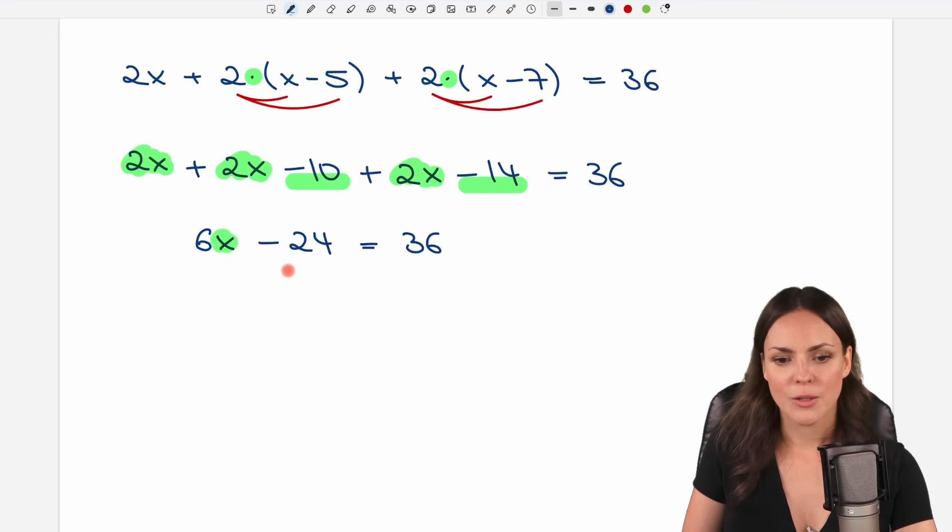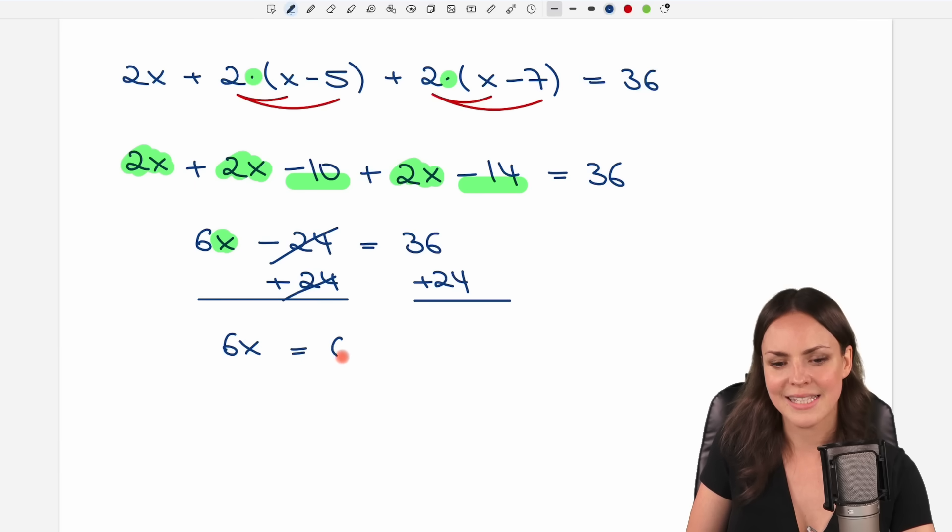To solve for x we get rid of the negative 24 here so we add 24 on both sides of the equation. So that we have the 6x here. This cancels out. And on the other side we have 36 plus 24 which equals 60. To solve for x we divide both sides by the 6 here so that this cancels out. And only our x is left. 60 over 6 equals 10.